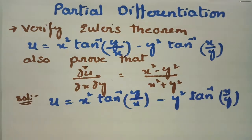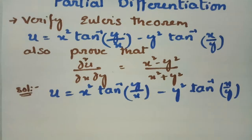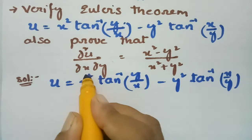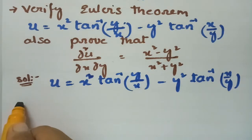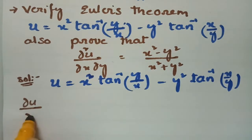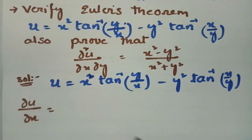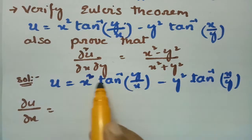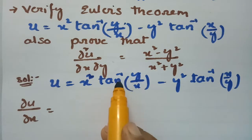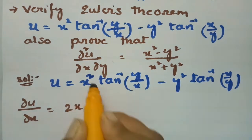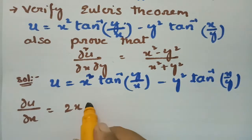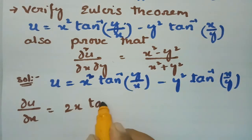For verification of Euler's theorem, I have to make a derivative with respect to x. So ∂u/∂x: applying the UV rule, for x square the derivative is 2x, leaving tan inverse of y by x as it is.